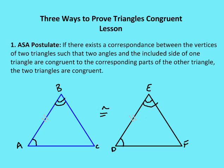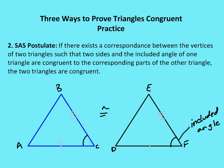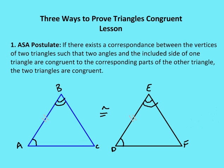So to summarize: the first method is Side-Side-Side — if three sides are congruent. The second is Side-Angle-Side — if two sides and the included angle are congruent. And third is Angle-Side-Angle — if two angles and the included side are congruent. In all three cases, we know that the triangles are fully congruent, meaning all corresponding parts of the triangles — not just the three identified — are going to be congruent.